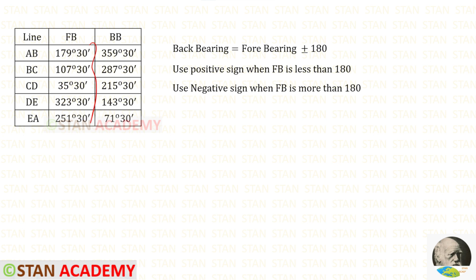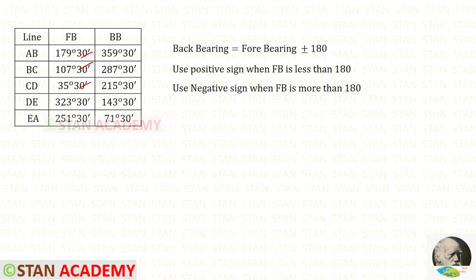Now we are going to find the back bearings. The formula to find the back bearing is: forebearing plus or minus 180 degrees. When the forebearing is less than 180 degrees, we use the positive sign. When the forebearing is more than 180 degrees, we use the negative sign. The three bearings that are less than 180 degrees require adding 180 degrees to get the back bearings. The two bearings that are more than 180 degrees require subtracting 180 degrees to get the back bearings.